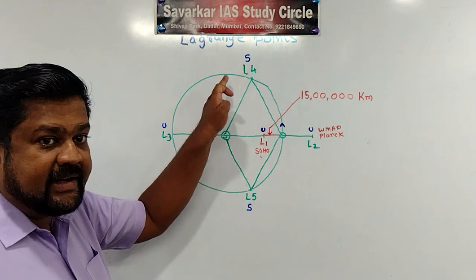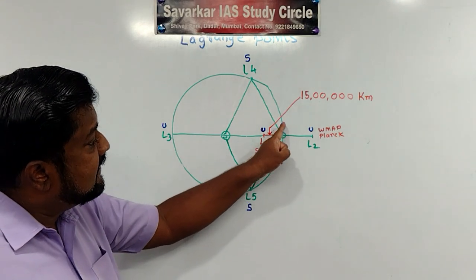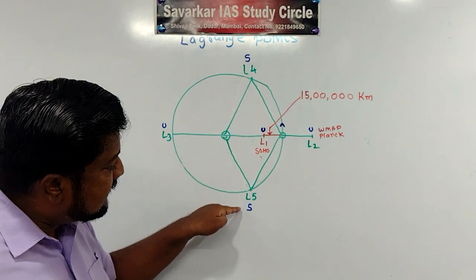Now Earth is orbiting in this direction. So L4 point is here. That is we can say leading to the direction of Earth. Whereas L5 point is following.